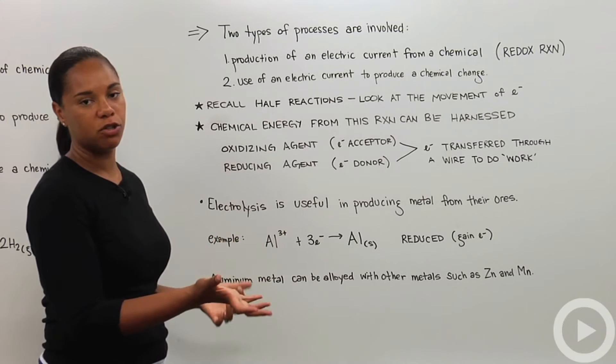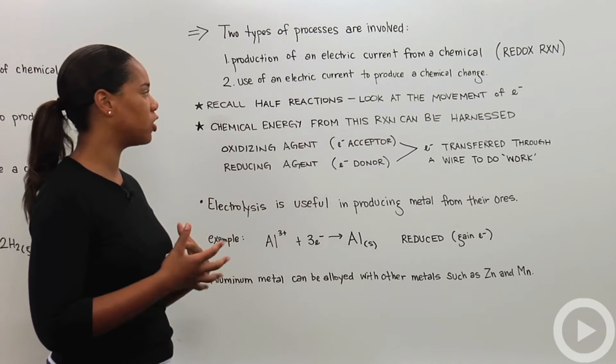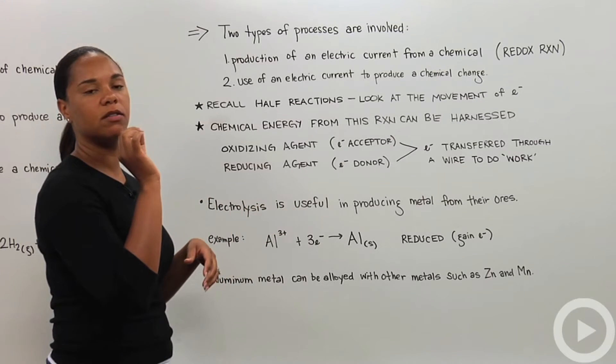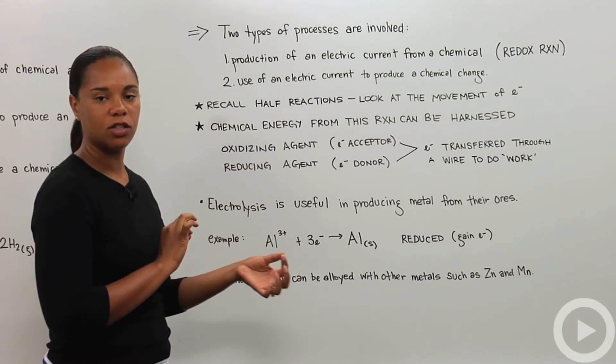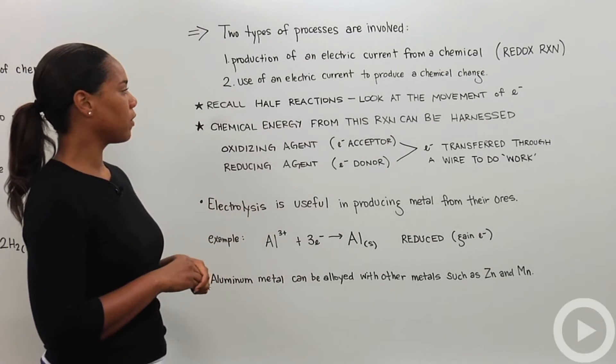Recall that half reactions help you look at and keep track of the movement of electrons. You have a species that's being oxidized, usually a metal, and a species that's being reduced, usually a non-metal. Those two things work together to give you a redox reaction. If you write the half reactions, you can specifically look at how many electrons are being moved back and forth between the two species.